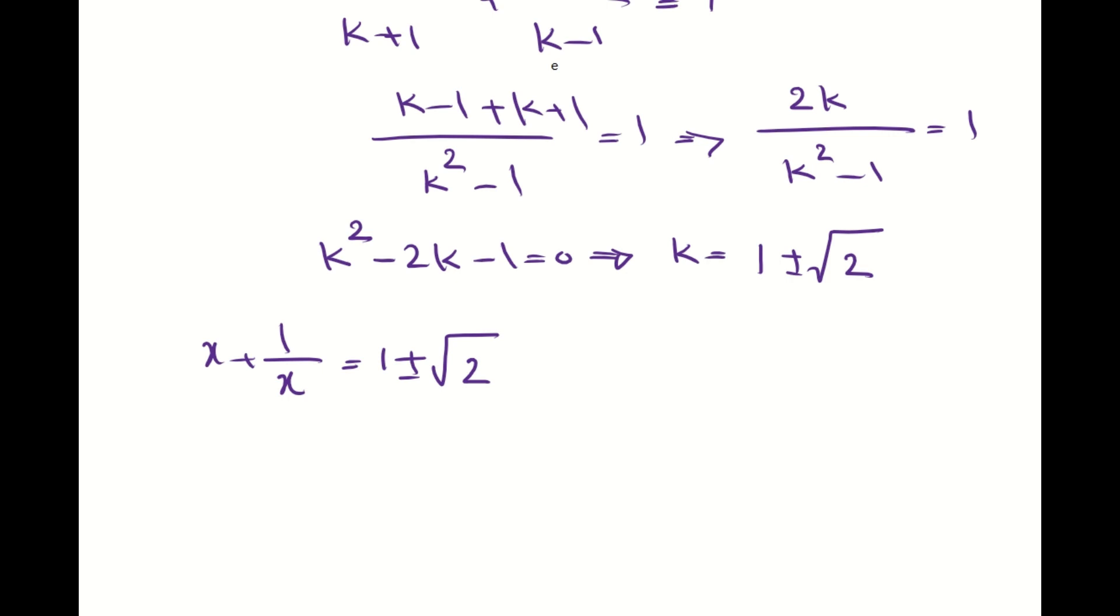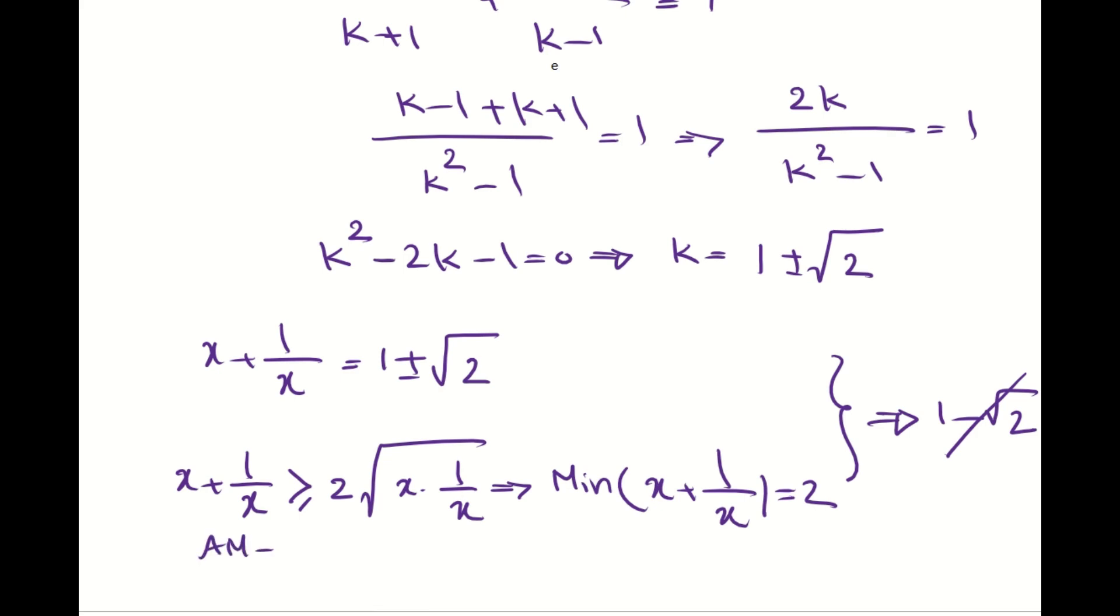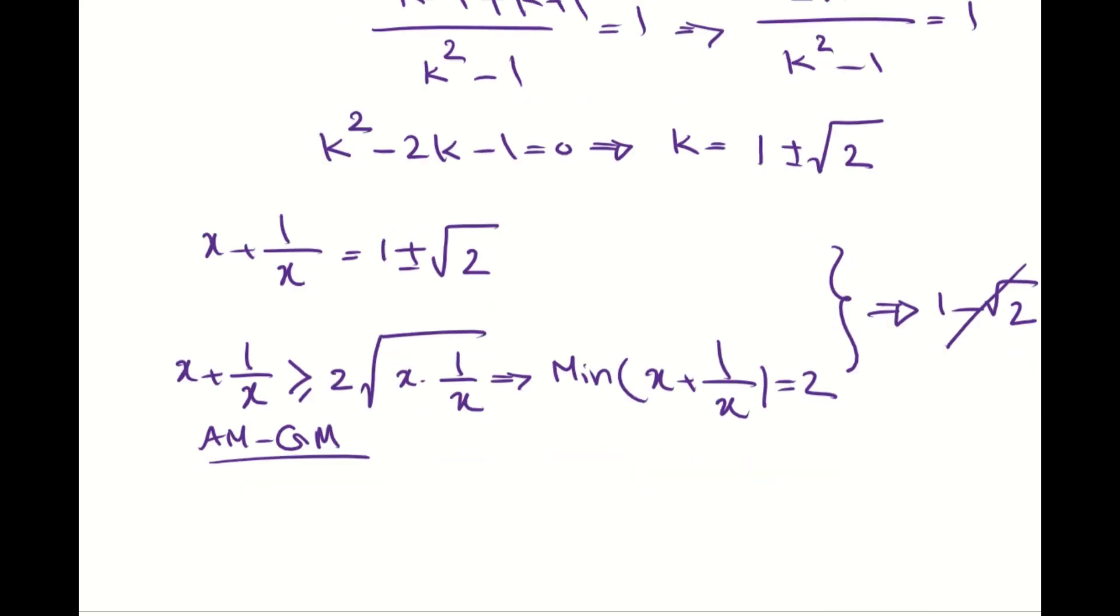Now the question that we need to answer is which value is possible? Based on AM-GM inequality, you can say that x plus 1 over x is going to be greater than or equal to 2 times radical x times 1 over x. So basically, the minimum value that we can have for x plus 1 over x is 2. What this means is we cannot have 1 minus radical 2 as answer.